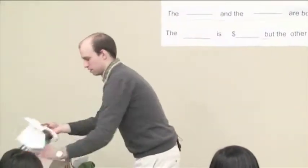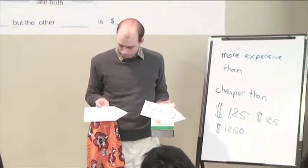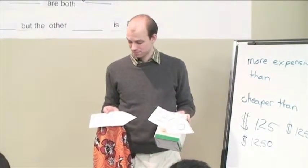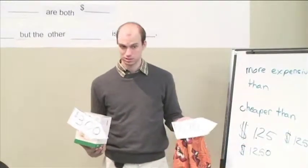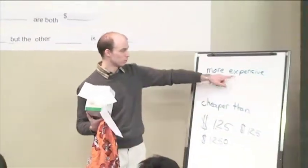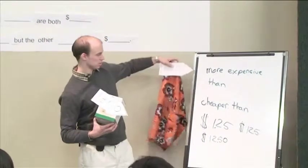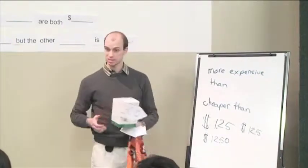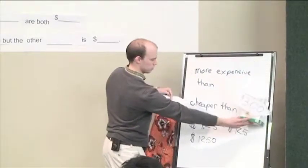I think we're getting this now. Those are the same price — what would the sentence be for this? The short is more expensive than the box. Good. So whenever you use 'more expensive,' whatever is here has to be more expensive. It's always comparing the first to the second. This is more expensive than this. Can you say this? No.